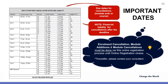Some important dates to note. On screen is a table detailing the financial implications involved in late module cancellation. The first column indicates the period in which the module is offered, the start and end date for module cancellations, and the financial percentage liable for payment in the event of late cancellations. Please note: enrollment, cancellations and module amendments must be done by you using this online registration process until online registration closes. Thereafter, please contact your administrative consultant for assistance.